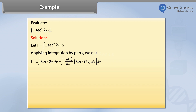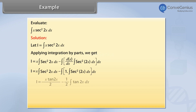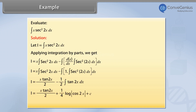Continuing: I is equal to x into the integral of sec squared 2x minus the integral of 1 into the integral of sec squared 2x. This gives I equal to x into tan(2x)/2 minus (1/2) into the integral of tan(2x) with respect to x. Therefore I equals tan(2x)/2 plus (1/4) log|cos(2x)|.